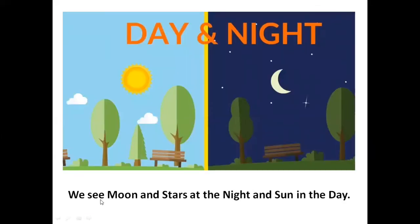We see moon and stars at the night and sun in the day. So children, when it's a bright sunny day we see sun and there is light everywhere, but in the night it gets dark and we see moon and stars. So repeat after me.